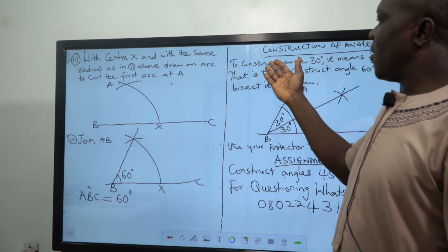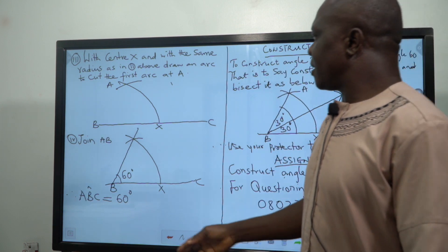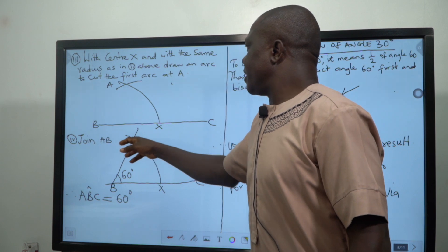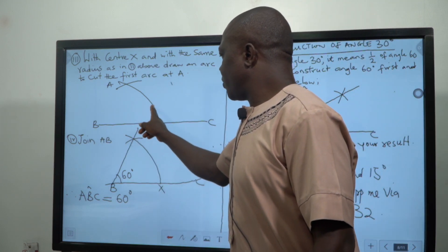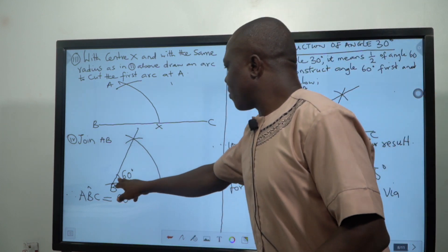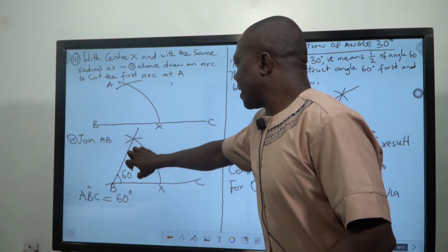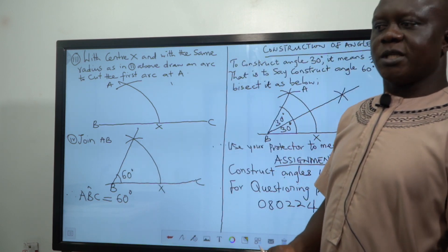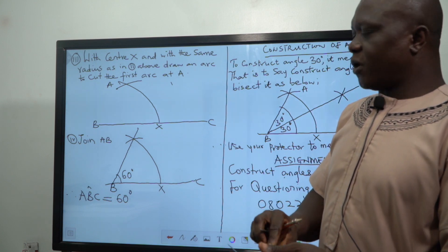Then if you want to draw angle 60, which is our main aim here, we say join AB. That is you use a line as you can see now. We use a line to join AB, and the angle from this line to this place, that is the angle that is inside here now is angle 60 degrees.